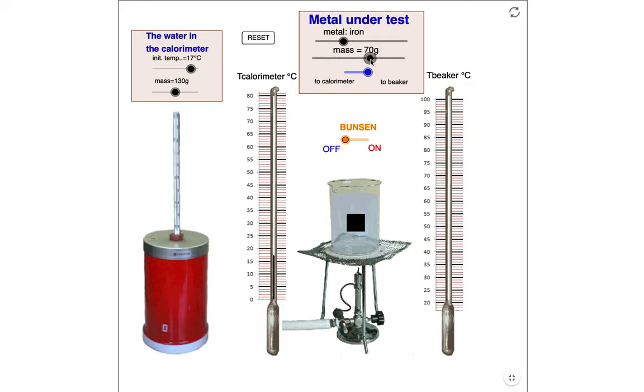Then I can heat this particular metal up by turning on the Bunsen burner. As the Bunsen burner is left on, the temperature of the beaker and the water and the substance rises. When it gets to the temperature that you want it to be, you can just turn it off and then use the thermometer on the right to record the initial temperature of the metal. This is probably about 74 degrees Celsius, and that would be the initial temperature of my metal.